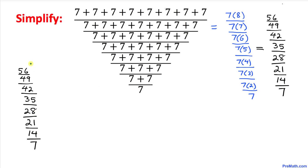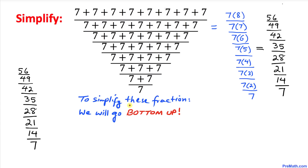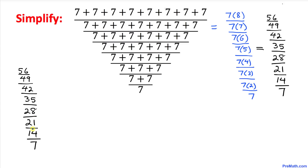I have just copied down these fractions right up here and now we are going to simplify them. The strategy we are going to employ is to go bottom-up — we're going to start from the bottom and work upward. Let's focus on the fraction 14 divided by 7, which easily reduces to 2. So I replace that fraction with 2.